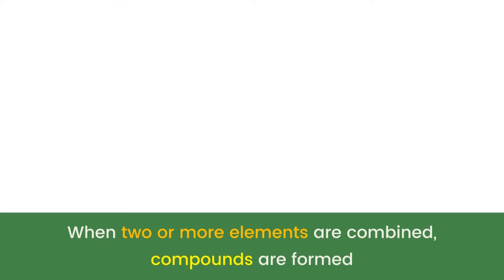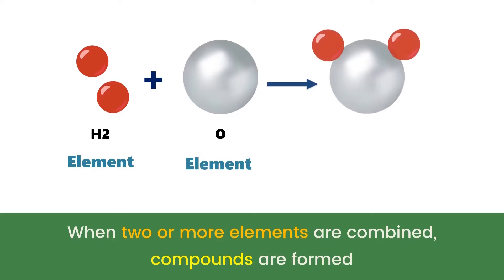For example, two atoms of hydrogen, which is an element, bonded with one atom of oxygen, which is another element. Hydrogen monoxide, or H2O, is formed. It is commonly known as water.